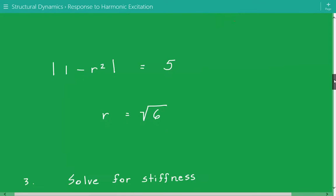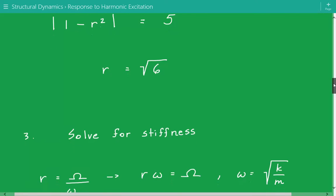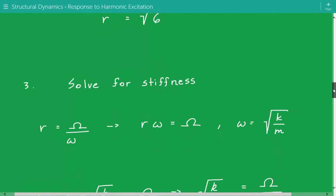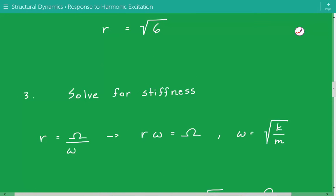Once we have this frequency ratio r, we can solve for stiffness. The frequency ratio r is equal to the excitation frequency divided by the natural frequency—the circular natural frequency—of our instrument package.